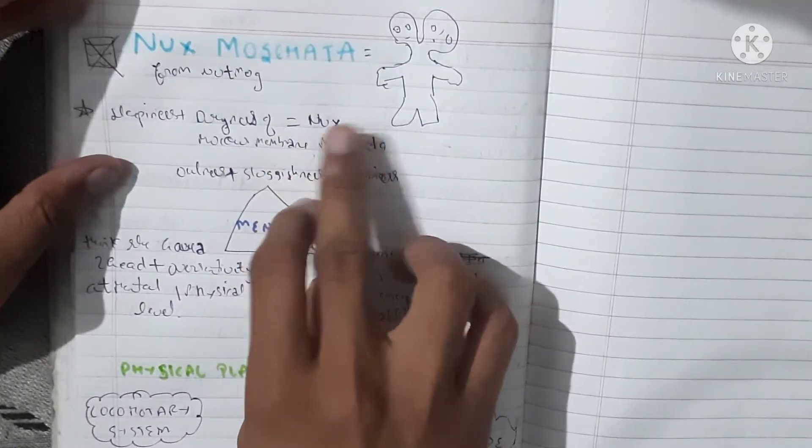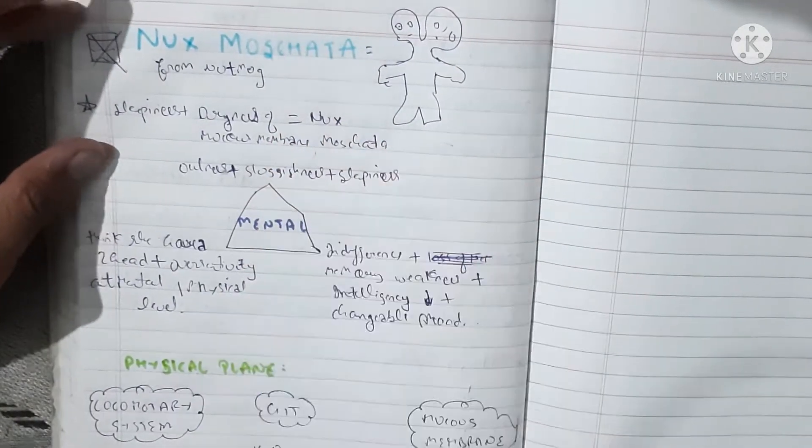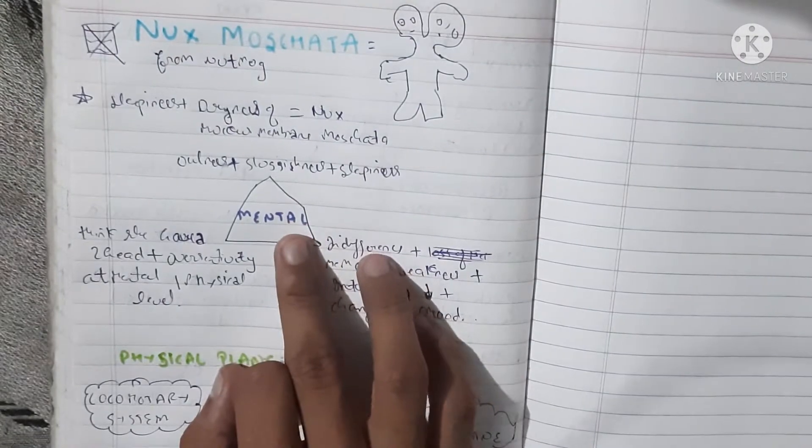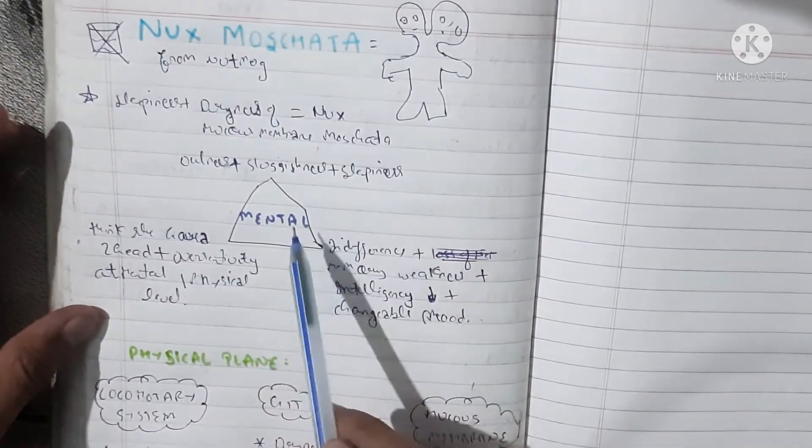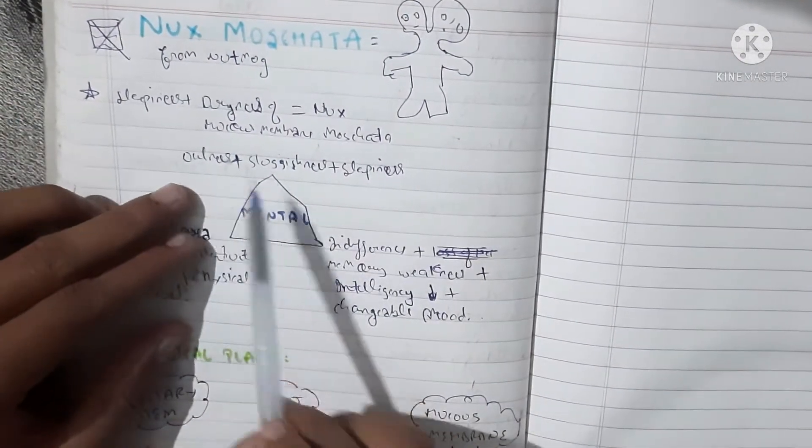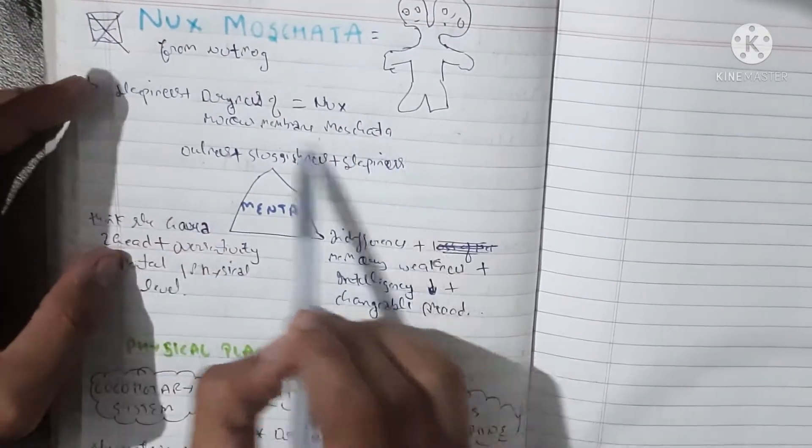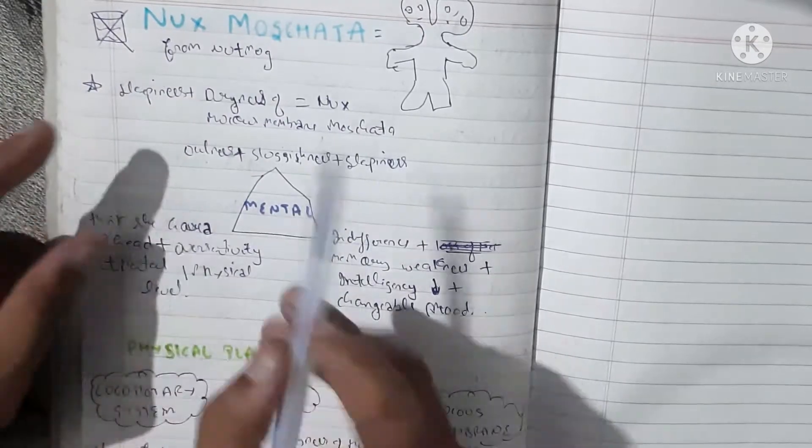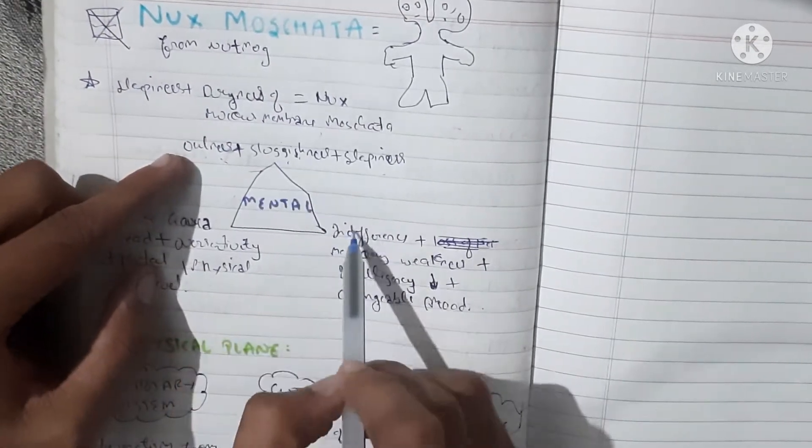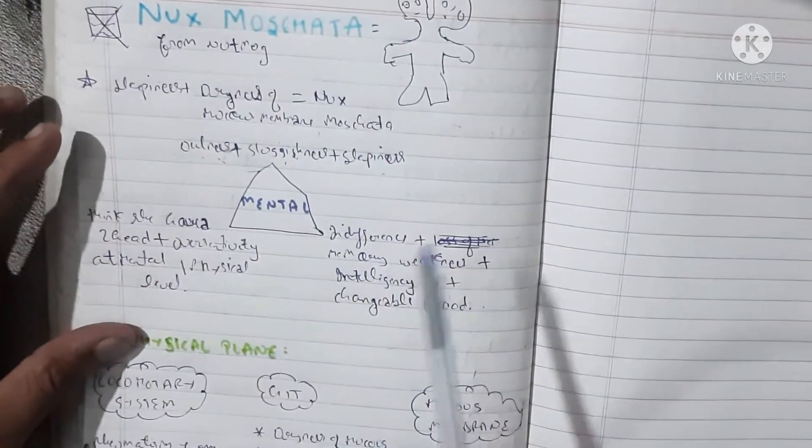Now the mental picture of this patient is having dullness, sluggishness, and sleepiness. These are our common three: dullness, sluggishness, and sleepiness. The other specific thing is that this medicine differentiates from opium and antimonium tartaricum.